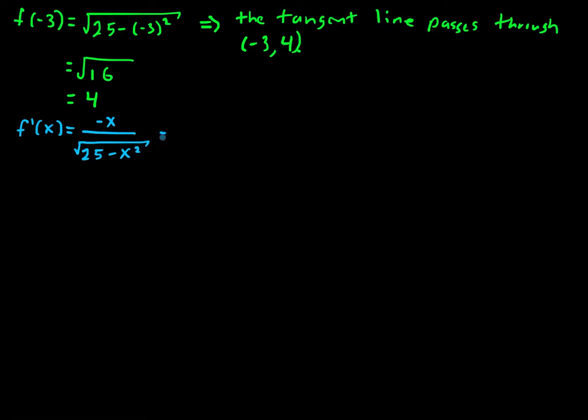So we can use that to figure out that f prime of negative 3 will be equal to negative negative 3 divided by 25 minus negative 3 squared. Negative negative 3 becomes positive 3. 25 minus 9 again is 16. Square root of that is 4. So I get 3 fourths.